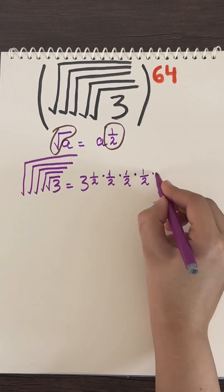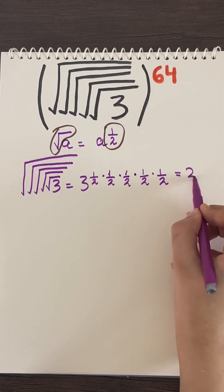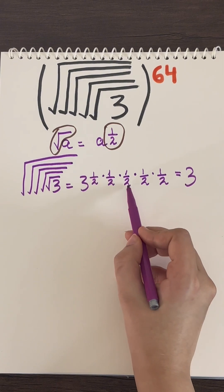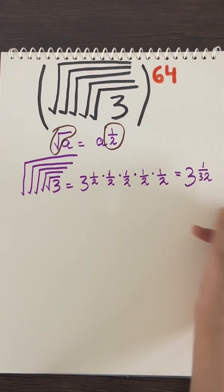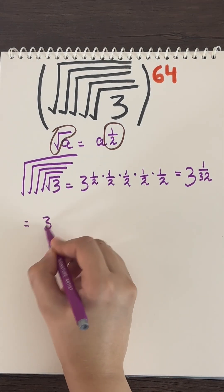Now we will write this three as it is and we will multiply all the powers together. This will give us three raised to the power of one thirty-second. So far we have simplified the roots.